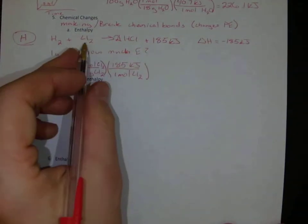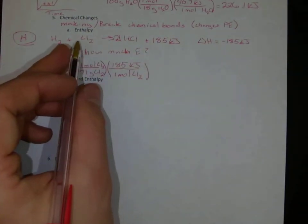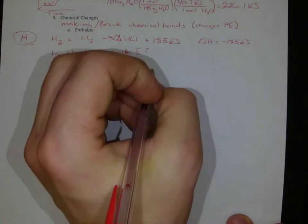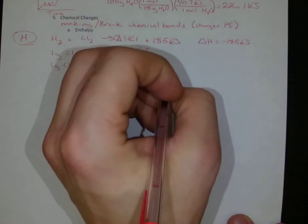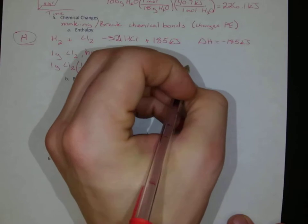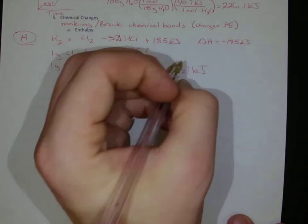For every mole of Cl2 in this reaction, I get 185 kilojoules. So if I do that calculation, then it's going to release 2.61 kilojoules.